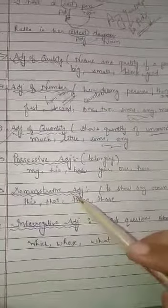Next is demonstrative adjective which are used to show any noun, which are used to show anything. For example, this, that, these and those. Next are interrogative adjectives which are used to ask a question about.